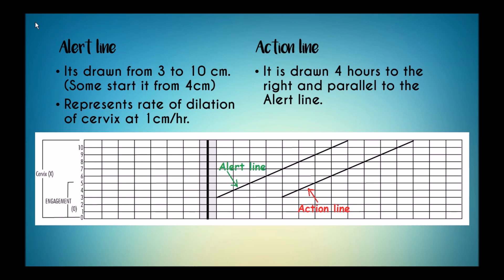The action line is drawn 4 hours to the right and parallel to the alert line. If during labor the graph crosses the alert line, it may be considered as a warning and cautious monitoring is needed. When the graph crosses the action line, the patient has to be referred to higher centers or appropriate action should be immediately taken.